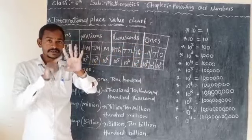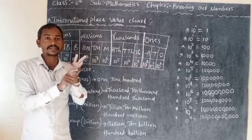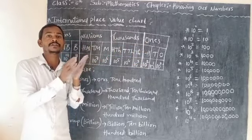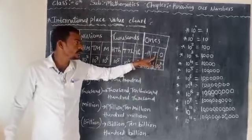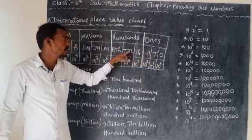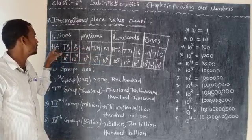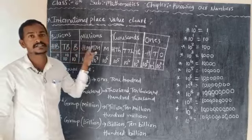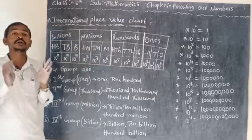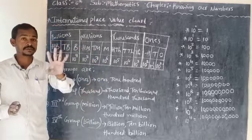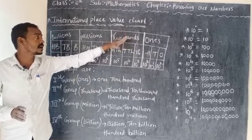There are 4 groups, and counting all places: 1 through 12. So the international system has 12 total places and 4 groups. The 4 groups are ones, thousands, millions, and billions.